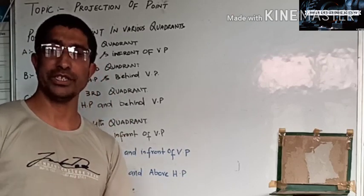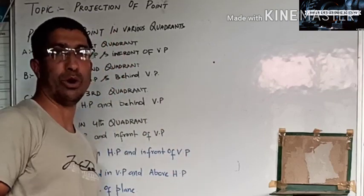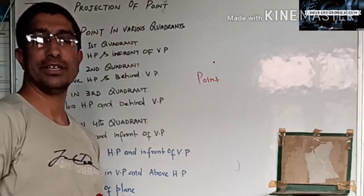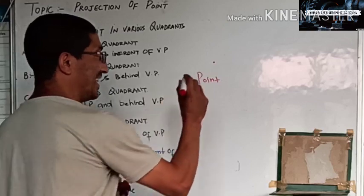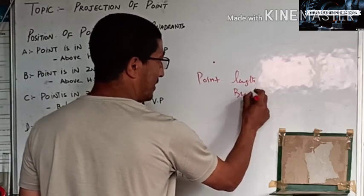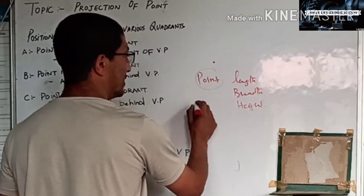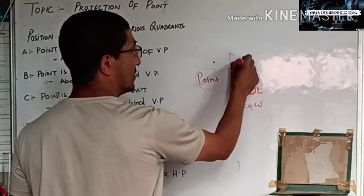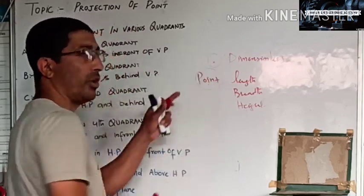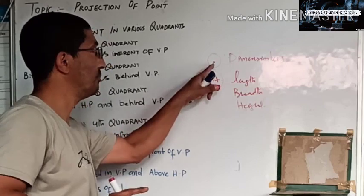What is a point? A point is a dimensionless entity. So we represent a point with a dot. It does not have any length, it does not have any breadth, and it does not have any height. It is dimensionless. A single dot represents the point.